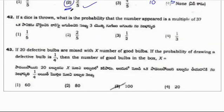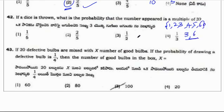If a die is thrown, what is the probability that the number appeared is a multiple of 3? When a die is thrown, total possible outcomes are 1, 2, 3, 4, 5, 6. Multiples of 3 are 3 and 6. So 2 favorable outcomes out of 6, which equals 1/3. The correct answer is 1/3, option 4.